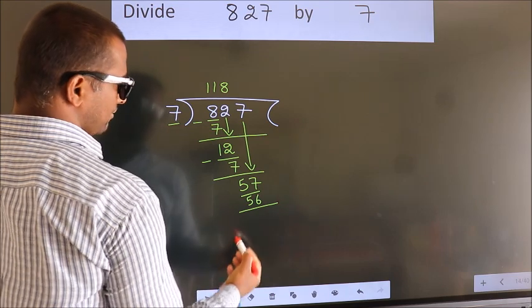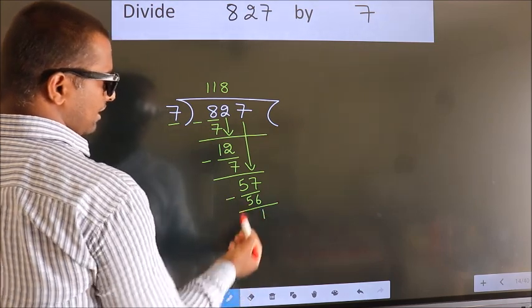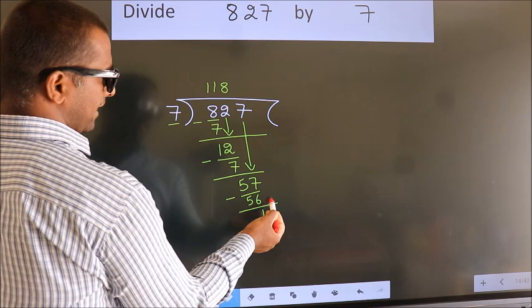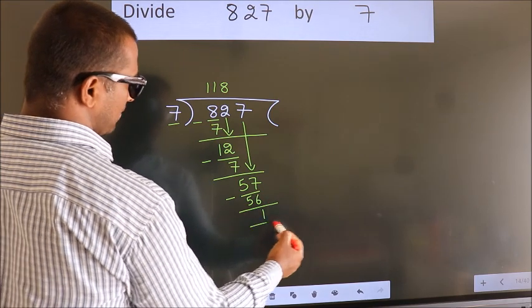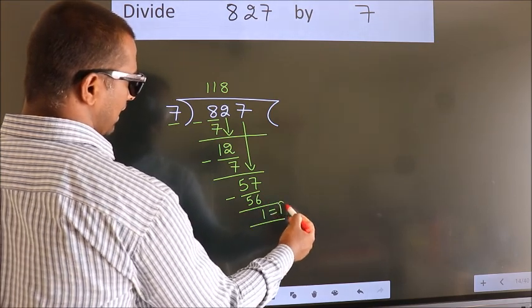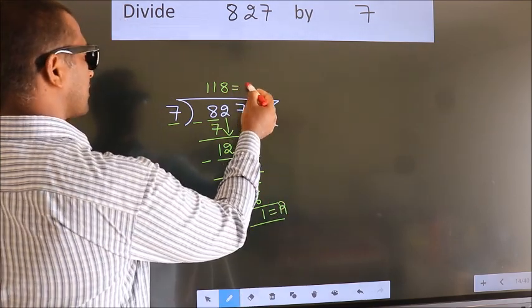Now we subtract. We get 1. No more numbers to bring down, so we stop here. This is our remainder. This is our quotient.